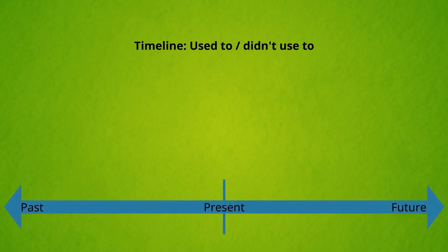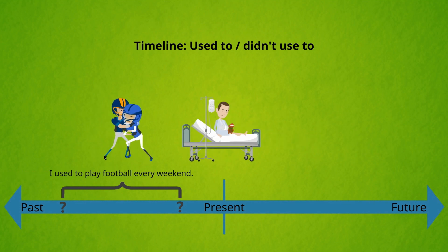Looking at a timeline, 'used to' and 'didn't used to' talk about something that happened regularly in the past. It started at an unknown time in the past and stopped happening at an unknown time in the past. For example: 'I used to play football every weekend.'